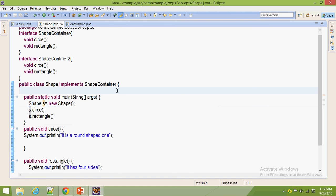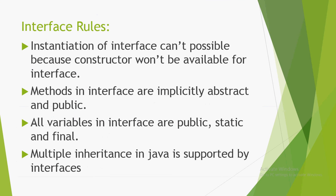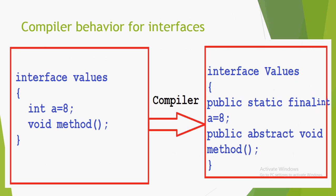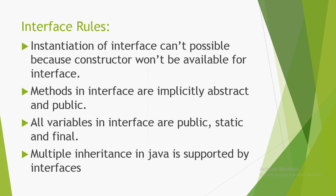Some rules exist for an interface. Instantiation of an interface is not possible because a constructor won't be available for interface. Methods in an interface are implicitly abstract and public. All variables in an interface are public, static, and final — whatever variables we declare, the compiler treats them as constants by adding public static final, and whatever methods we declare, the compiler treats them as abstract methods by adding public abstract. Multiple inheritance is supported in interface.